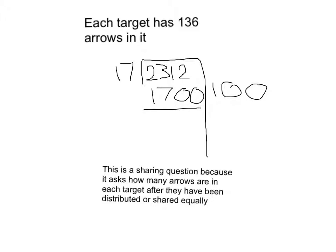Put a line there. 2,312 minus 1,700 is 612. 17 times 30 is 510, which is close to 612. That's why I chose 30. So 510, I ran out of space again, so I'm going to move over here.